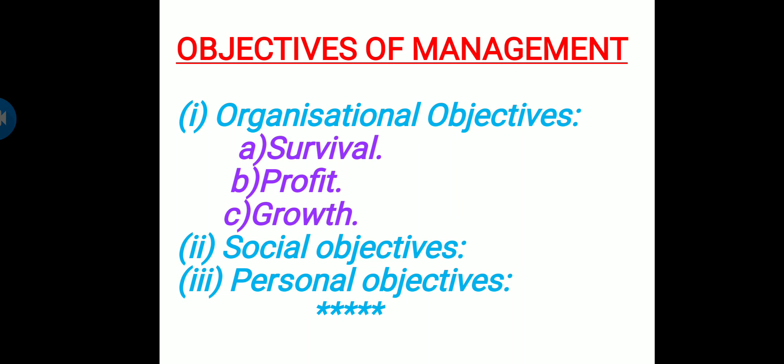We know that every organization will have their own objectives. There is no organization without objectives. In the same manner, management also has some objectives. The management's main aim is to achieve the organization's objectives. These objectives can be classified into organizational objectives, social objectives, and personal or individual objectives.